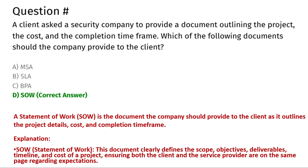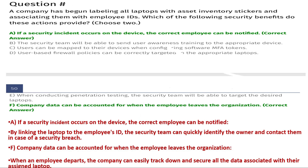The next question: a company has begun labeling all laptops with asset inventory stickers and associating them with employee IDs. Which of the following security benefits does this action provide? Choose two. Option A: if a security incident occurs on the device, the correct employee can be notified. Option B: the security team will be able to send user awareness training to the appropriate device. Option C: users can be mapped to their devices when configuring software MFA tokens. Option D: user-based firewall policies can be correctly targeted to the appropriate laptops. Option E: when conducting penetration testing, the security team will be able to target the desired laptops. Option F: company data can be accounted for when the employee leaves the organization.